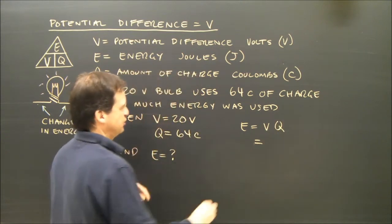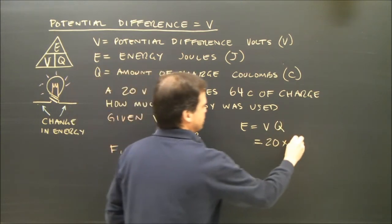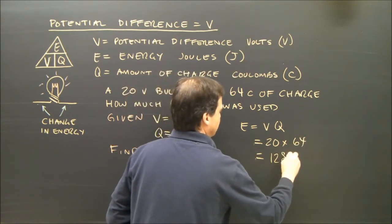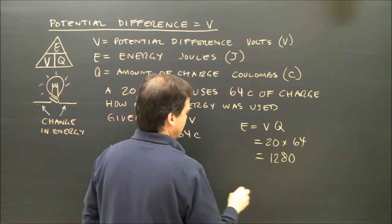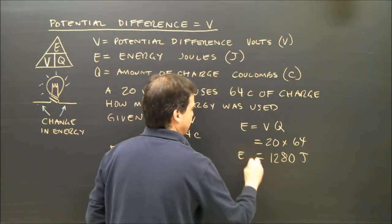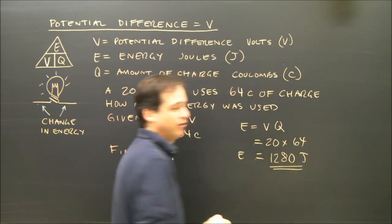My voltage is 20, and my charge is 64, which equals 1280, and the units for that are joules. Energy equals 1280 joules.